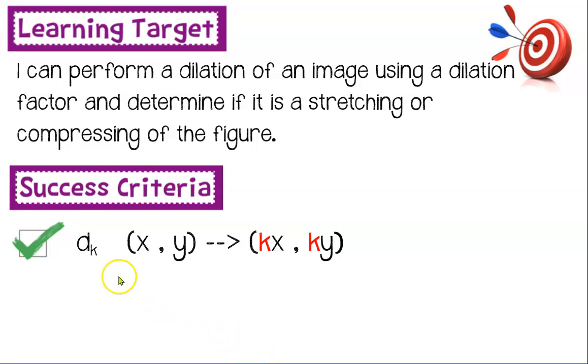To perform a dilation, you must be given this number in the k position. That's the factor. The factor can be a number higher than one or the factor can be a fraction, but it's always going to be positive. It can never be negative.